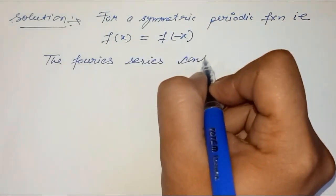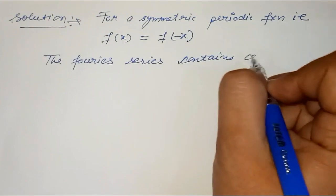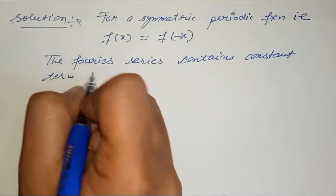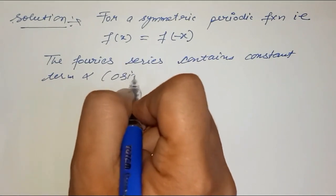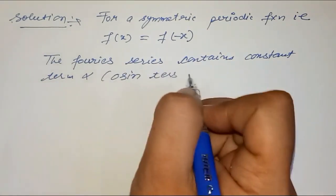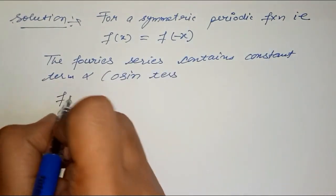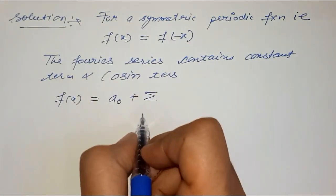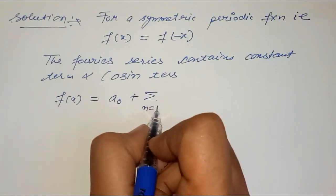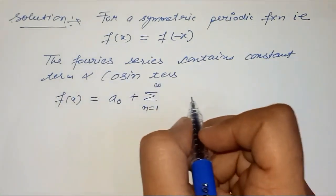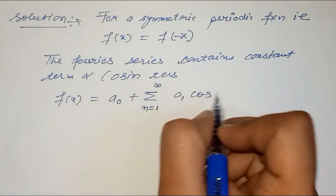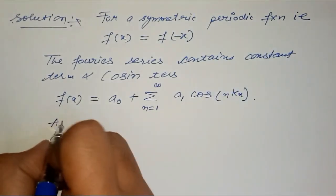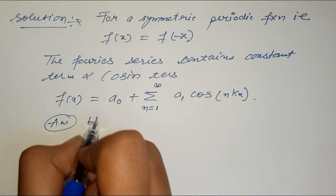...contains constant term and cosine terms. So f(x) equals a_0 plus sigma n equals 1 to infinity a_n cos(nkx). Our answer is B.